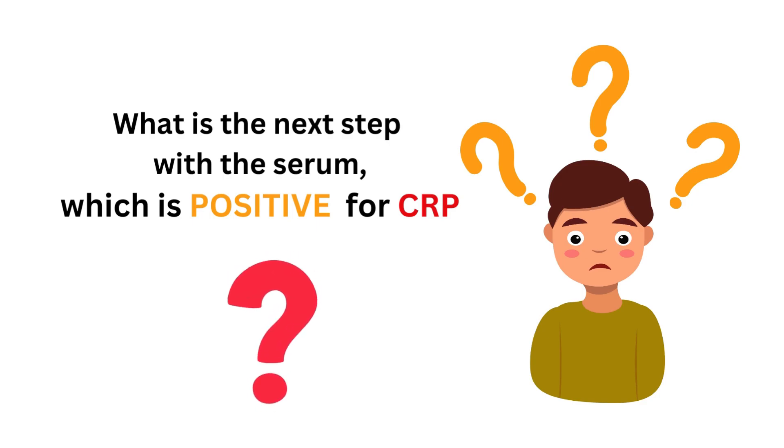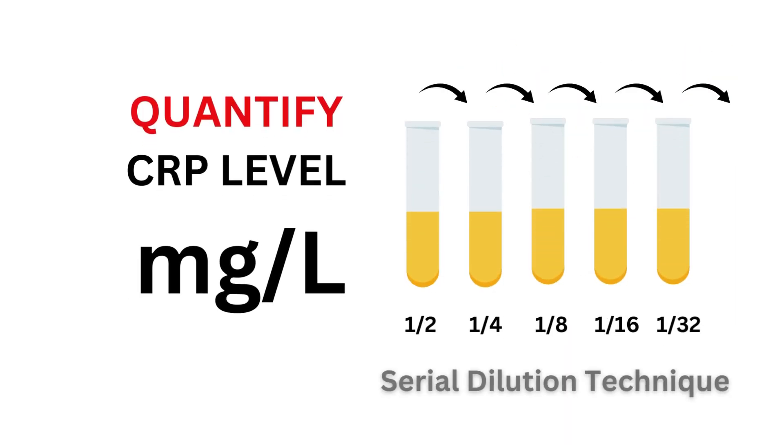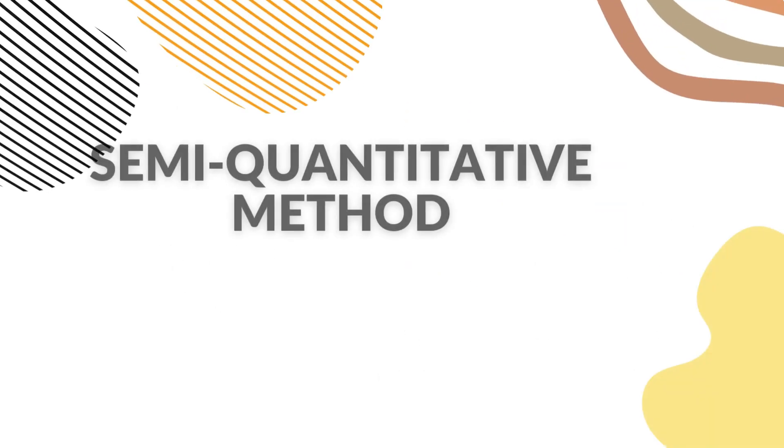In this method, we will quantify the CRP level in milligram per liter following serial dilution technique. This method is called the semi-quantitative method.